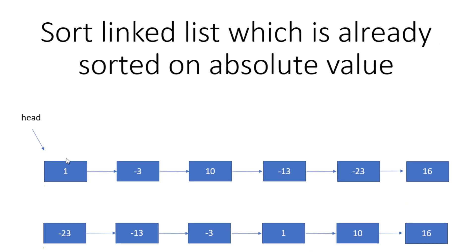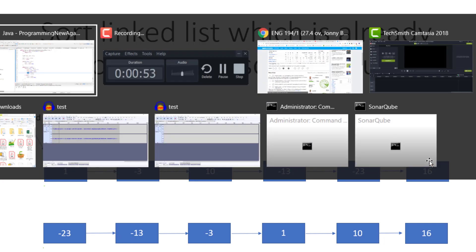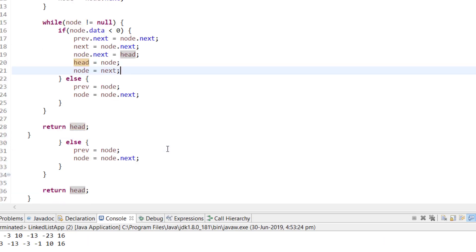Tracing through: 1 is positive, do nothing. -3 is negative — -3 points to 10 and -3 points to head (1). 10 is positive, do nothing. -13 is negative — 10 points to -23 and -13 points to head (-3). -23 is negative — -13 points to 16 and -23 points to head (-13). 16 is positive, do nothing.